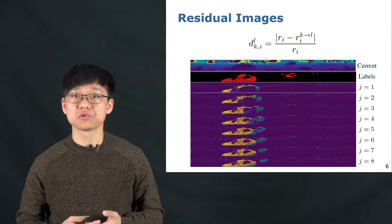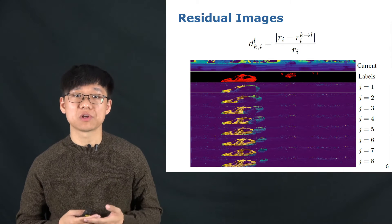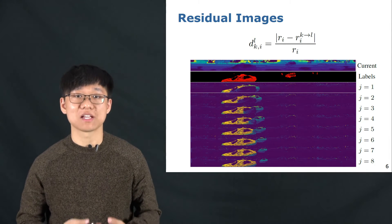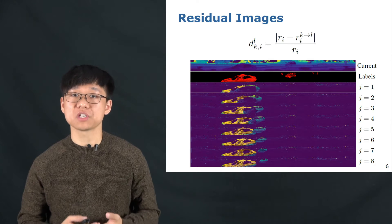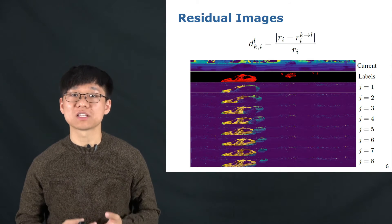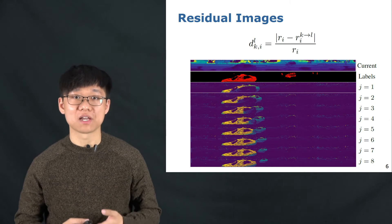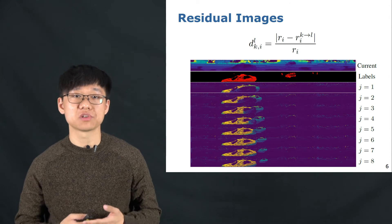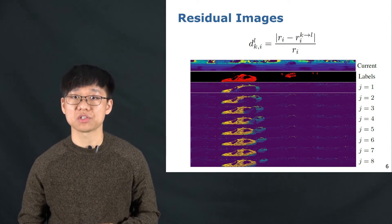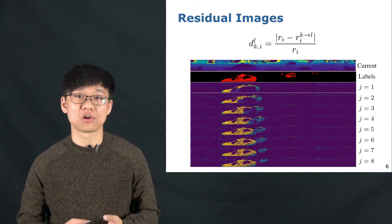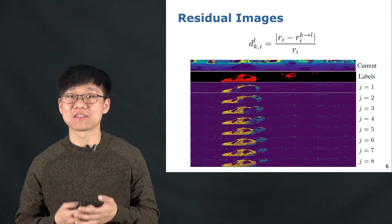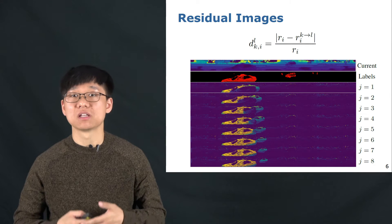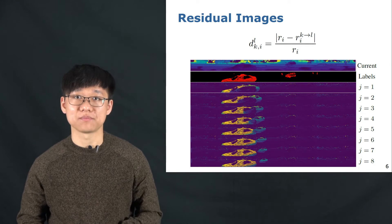Here we show the residual image generated from the past eight scans. As can be seen from the residual images, we could already see a rough outline of the moving objects. Using the residual images together with the current observation, we exploit the sequential information to guide the network to better detect and segment the moving objects in the LiDAR data.